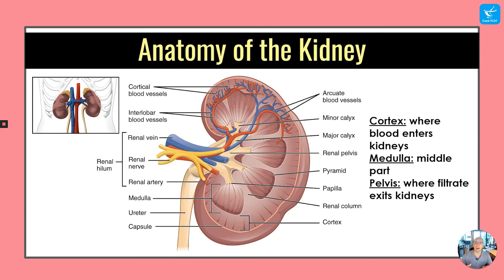Here's our anatomy of the kidney. First let's look at the cortex, and that's going to be where blood enters the kidney from the body. Then the medulla is the middle part that we see here, kind of in between the cortex and the pelvis. And the pelvis is going to be where the final product, the urine, is going to collect for excretion from the body.